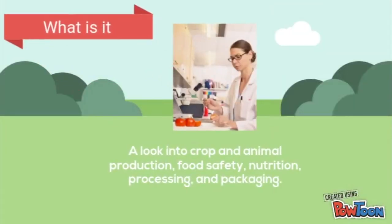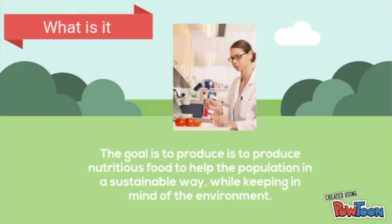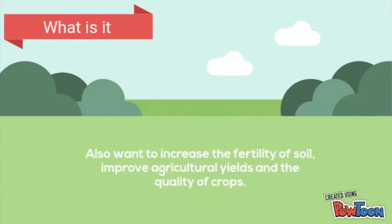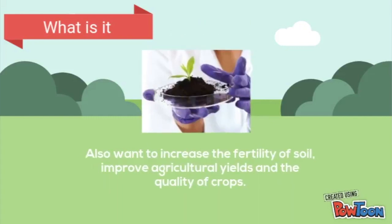So what is it? Agricultural chemistry is a look into crop and animal production, food safety, nutrition, processing, and packaging. The goal is to produce nutritious food to help the population in a sustainable way while keeping in mind the environment. Also, they want to increase the fertility of soil, improve agriculture yields, and the quality of crops.